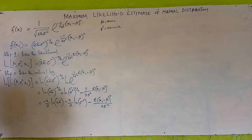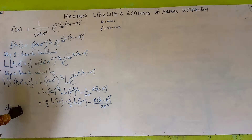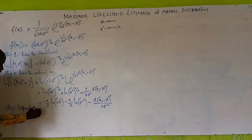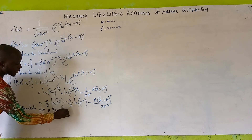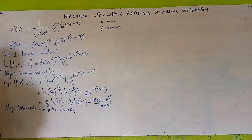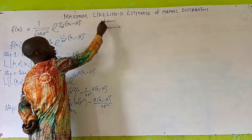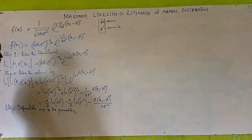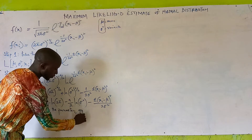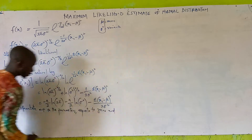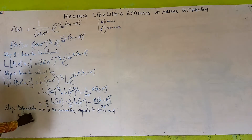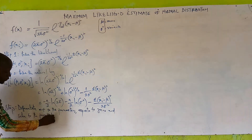Step 3: Differentiate the log-likelihood with respect to the parameters. We should not forget that we have two parameters — the mean mu and sigma squared. After finding the derivative with respect to each parameter, we equate to zero and solve for the parameter.